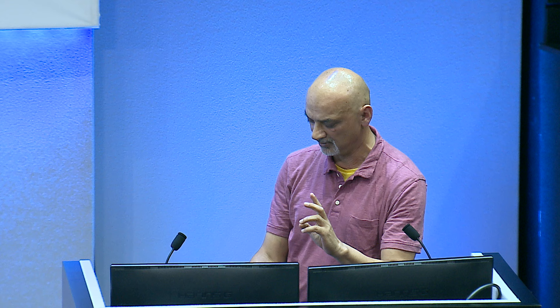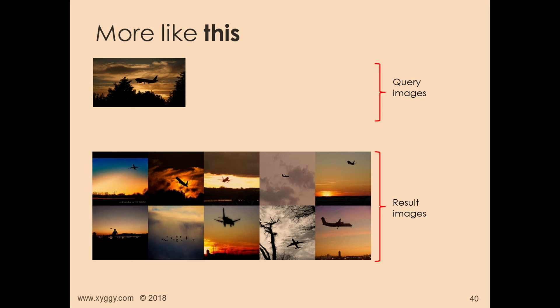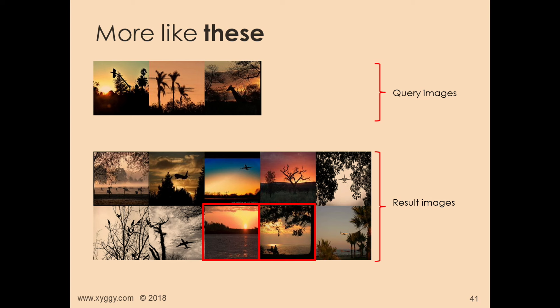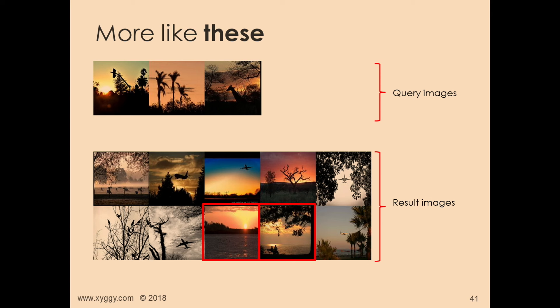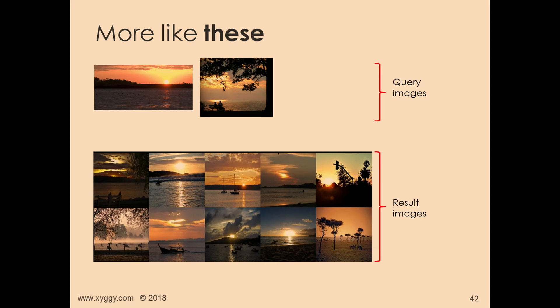The next query type is 'more like this and these.' I've got three query images at the top and get result images back. Then I say: give me more like that second one on the top left. And from the result images, give me more like those two specific ones. The engine goes away and does that — if you notice, the second image on the right shows two people on a bench, and in the new results it finds another painting with people on a bench.